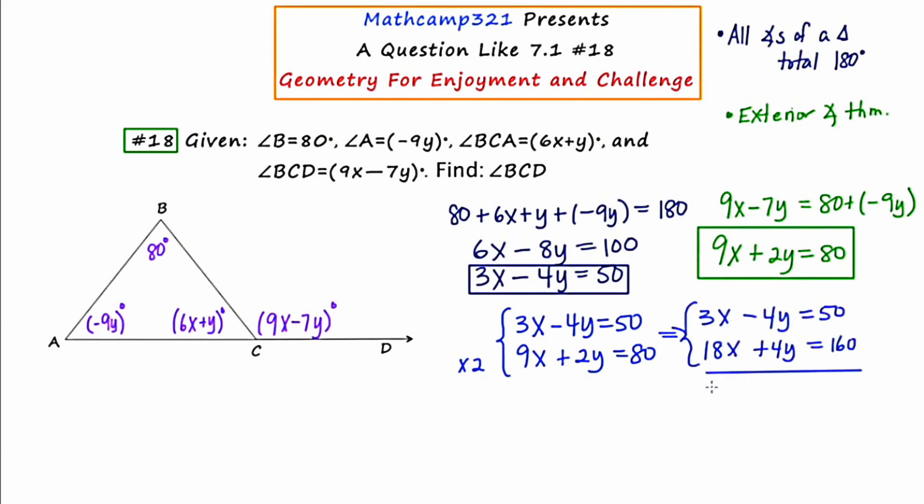Okay, now when I add downwards, the negative 4y and the 4y will cancel, and I'm left with 21x equals 210. Dividing both sides by 21, I get x equals 10.